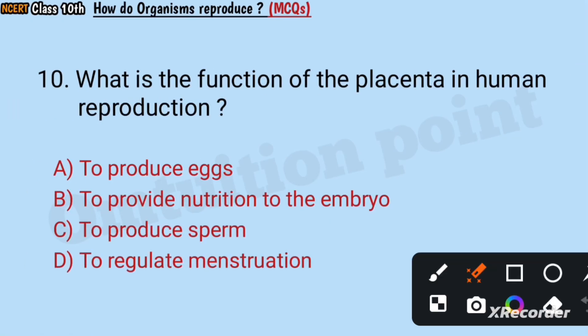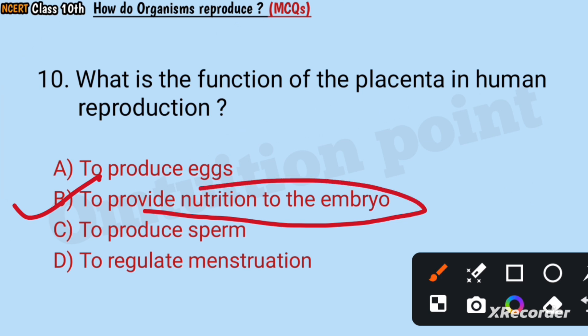Question number 10: What is the function of the placenta in human reproduction? To produce eggs, to provide nutrition to the embryo, to produce sperm, or to regulate menstruation? Answer: To provide nutrition to the embryo.